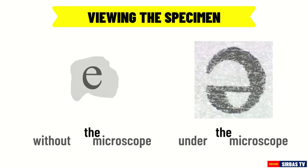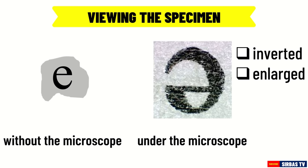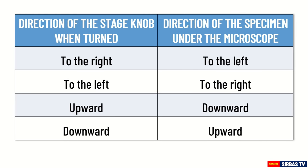Describe the position and image of the letter as seen under the microscope. The position of the letter E is inverted. The image is also larger — enlarged — compared to viewing with the naked eye. The letter also appears grainy and not in straight lines. The image is inverted because the compound microscope uses more than one lens, located on the eyepiece and the objective, and these lenses are convex lenses. This also affects slide movement: if you turn the stage knob to the right, the specimen moves left; if you turn it upward, the specimen moves downward.